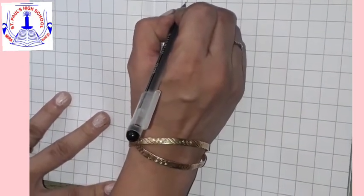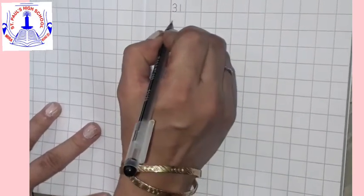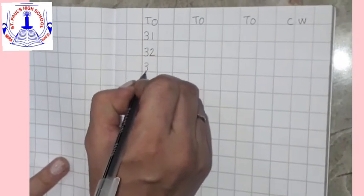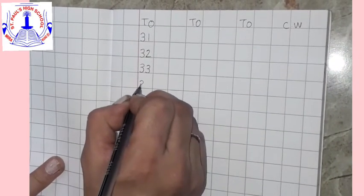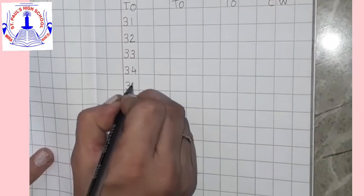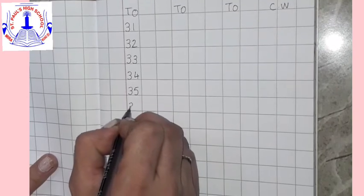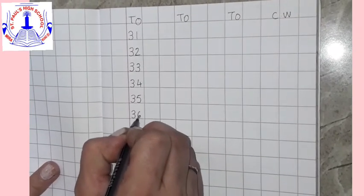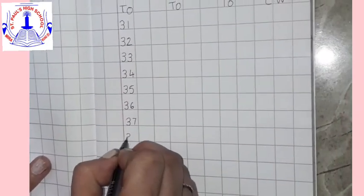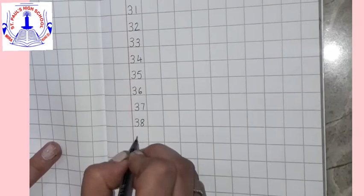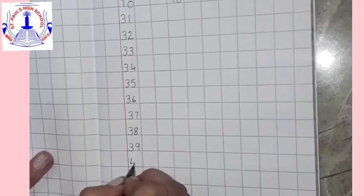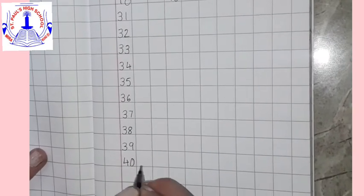Say 3, 1, 31. Then 32, 33, 34, 35, 36, 37, 38, 39, 40.